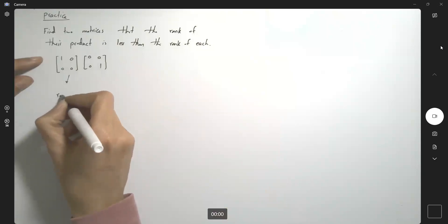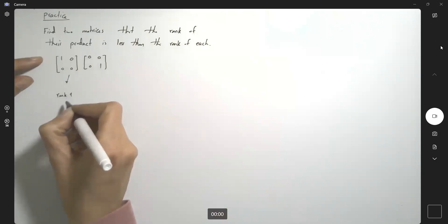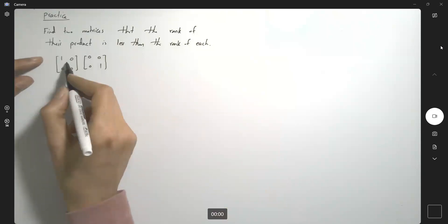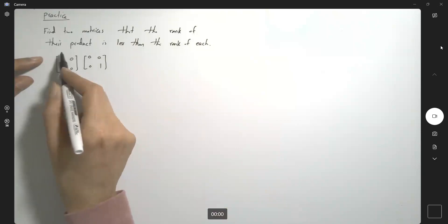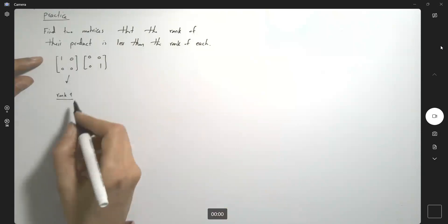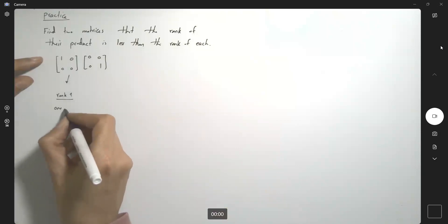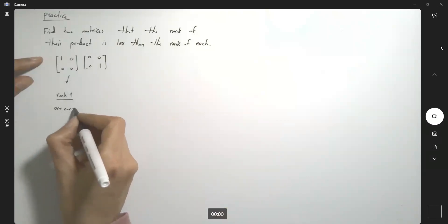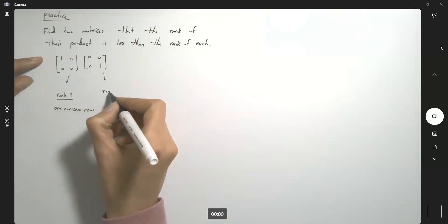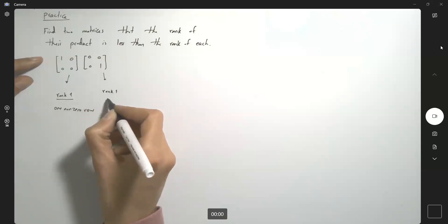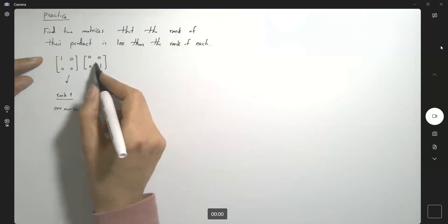This matrix has rank 1 — why? Because you have one non-zero row. This matrix also has rank 1, and why? Because you have one non-zero row.